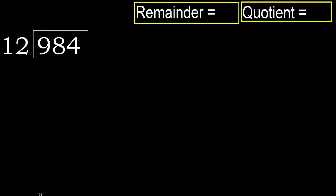984 divided by 12. 9 is less, therefore next. 98 is not less, therefore we work with 98 and 12.